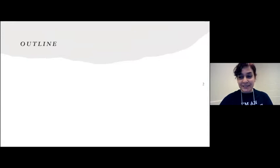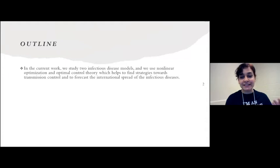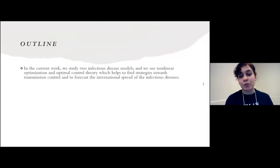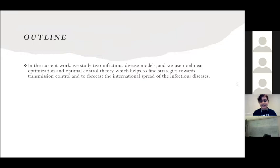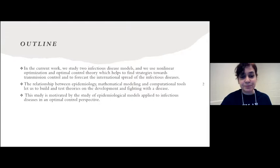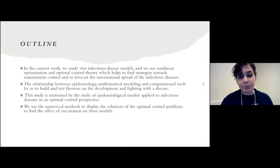The topic is about infectious disease models. As an outline, I'm going to briefly explain two infectious disease models — the basic models that everyone knows — and I'm going to use the optimal control approach to study them, and also find out how controls like vaccines, masks, or social distancing can mathematically help in controlling the spread of disease. I'll focus on the optimal control perspective.